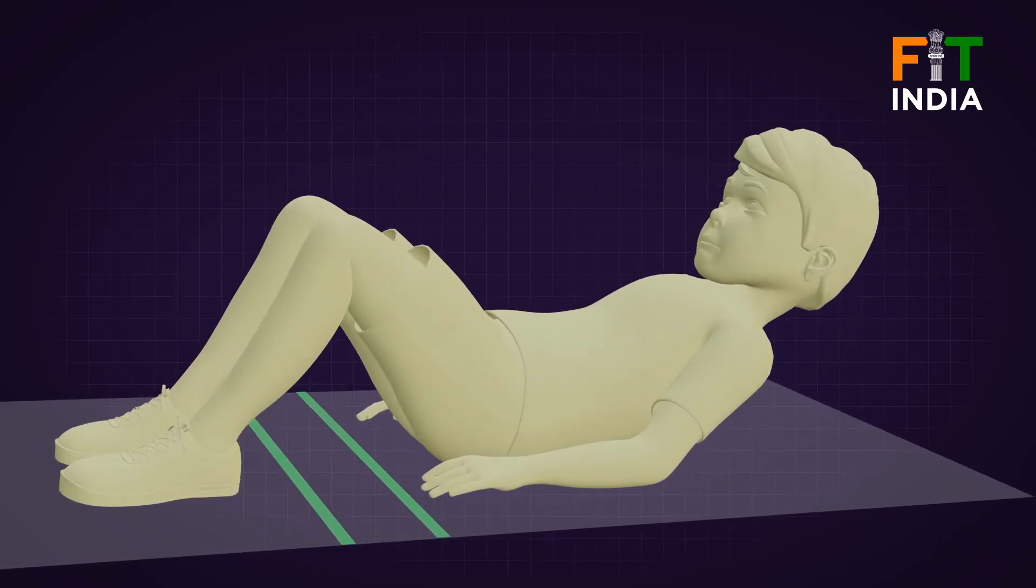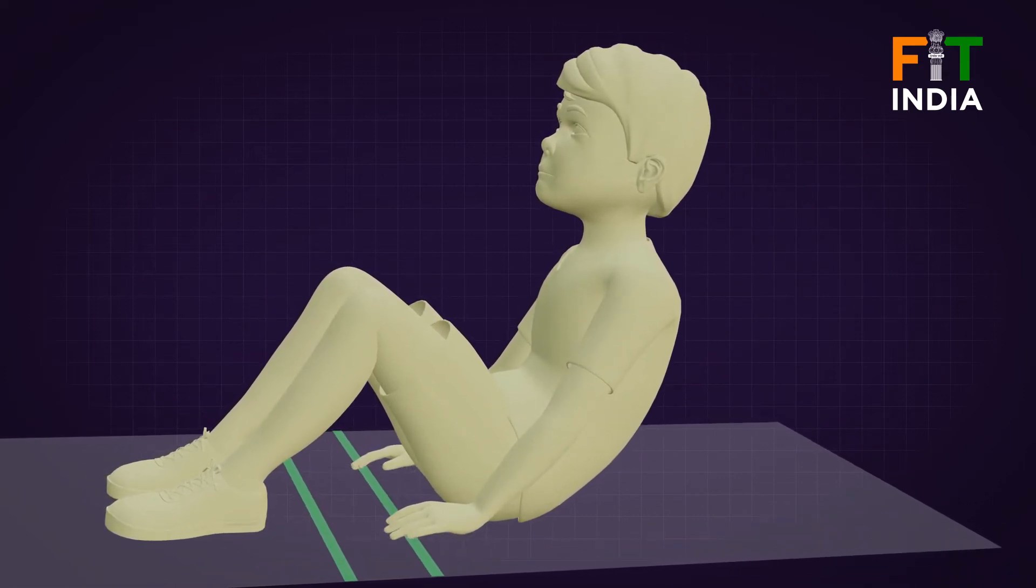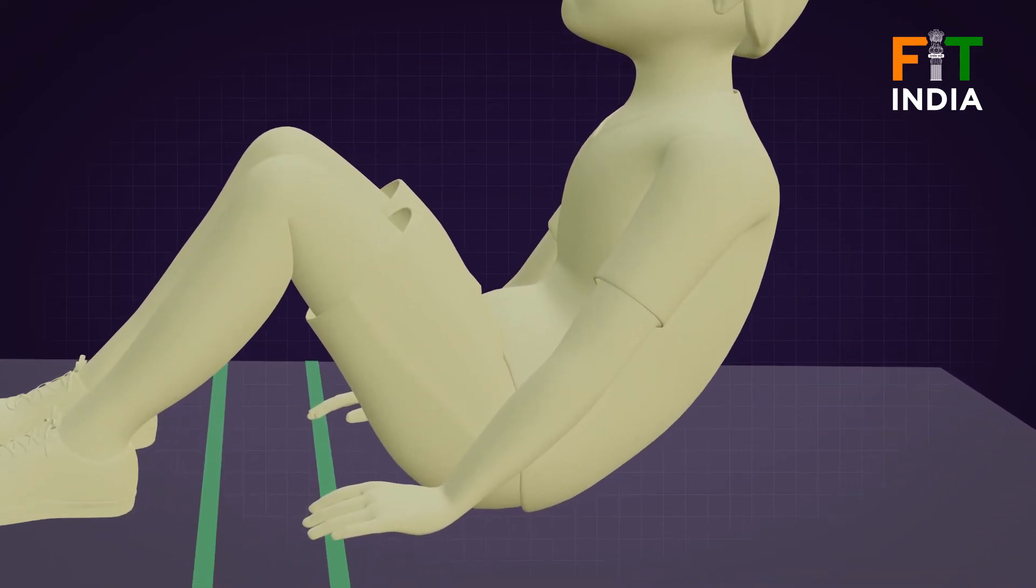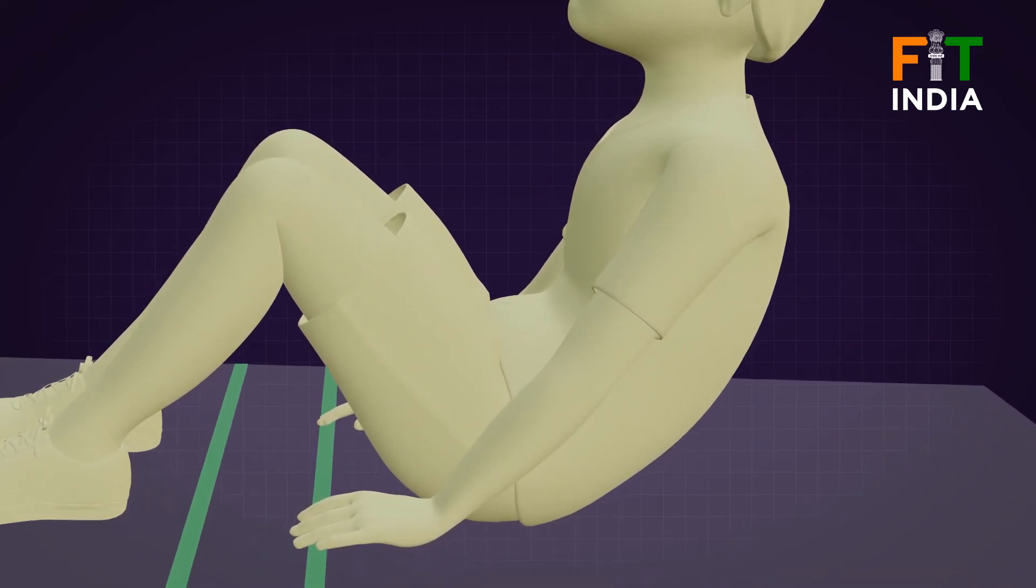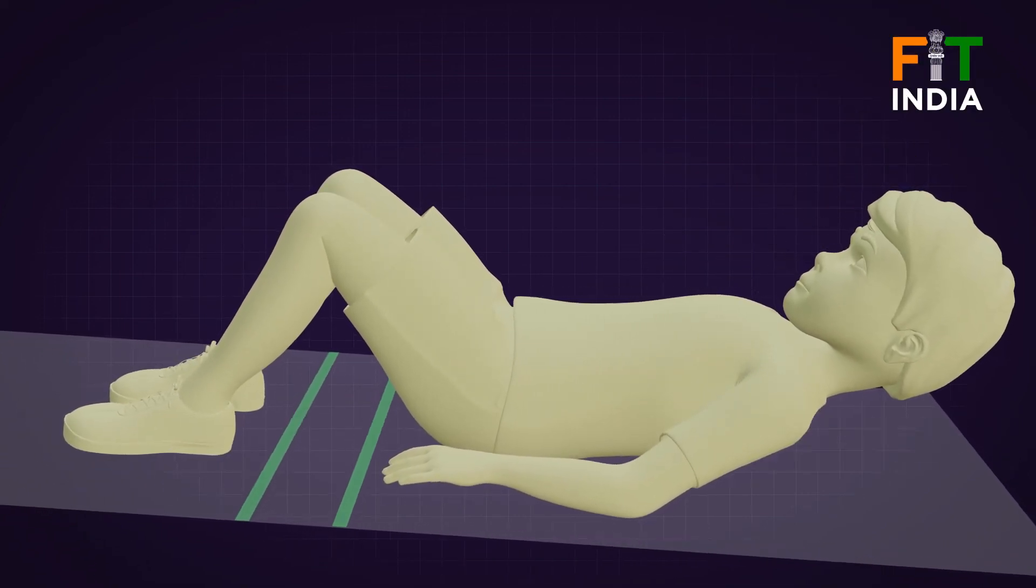The subject raises the trunk in a smooth motion, keeping the arms in position, curling up the desired amount at least six inches above the ground. The trunk is lowered back to the floor so that the shoulder blades or upper back touches the floor.